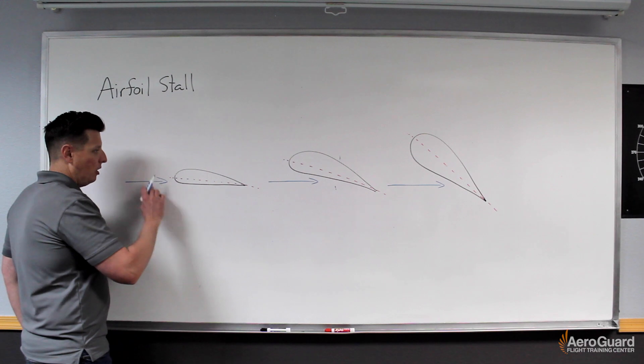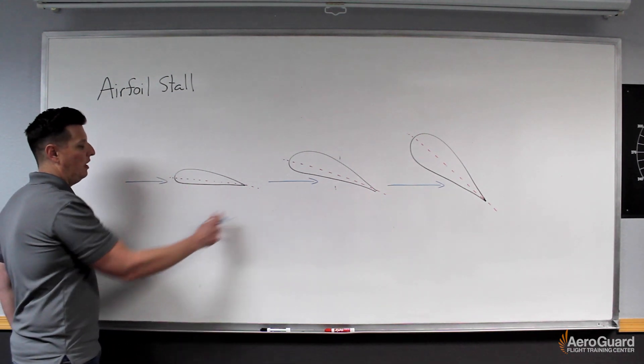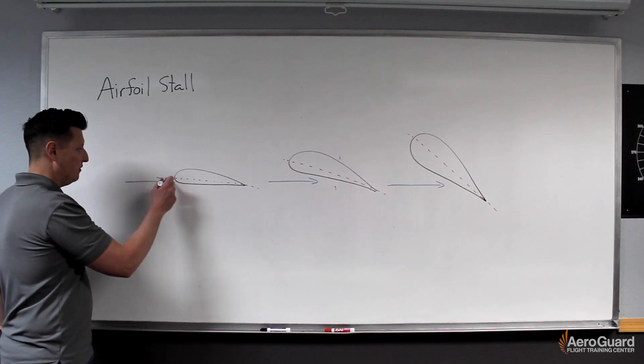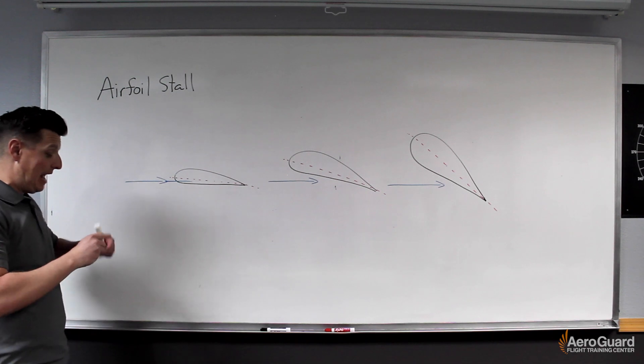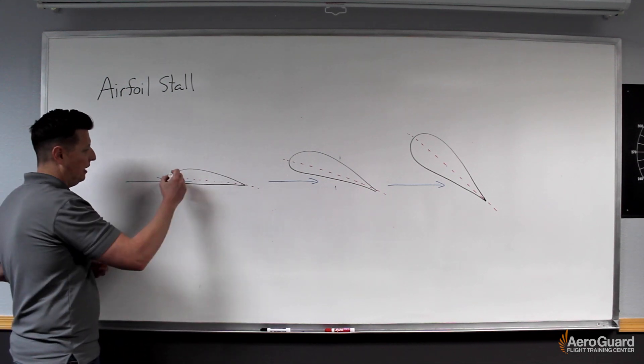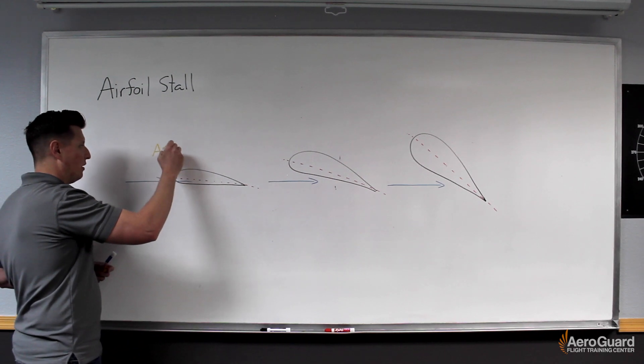So up here on the board I have this cutaway of an airfoil. We have the chord line drawn in red, we have this relative wind, and that angle that's formed between the chord line and the relative wind is our angle of attack or AOA.